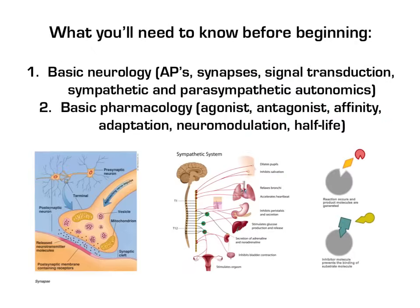A quick warning before we proceed. To fully understand this presentation, you'll need to have studied the following topics: basic neurology, like action potentials, synapses, and the autonomic nervous system, as well as basic pharmacology concepts like agonist, antagonist, half-life, and so on.